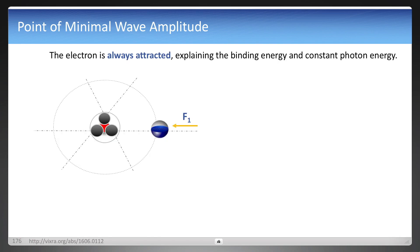Now the electron is always attracted to that positron. That explains the binding energy and the constant photon energy, because it's always attracted. But the electron is only repelled on an axis of alignment, and that explains its probability.